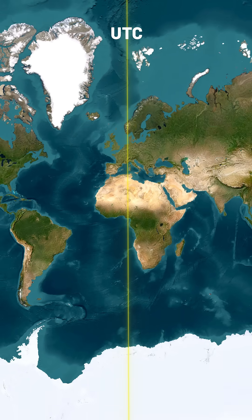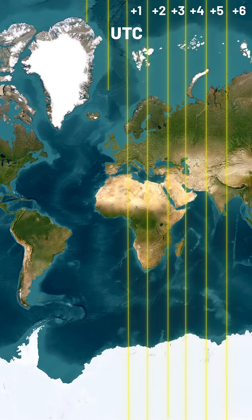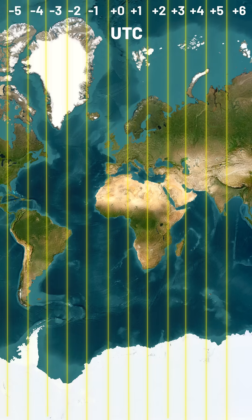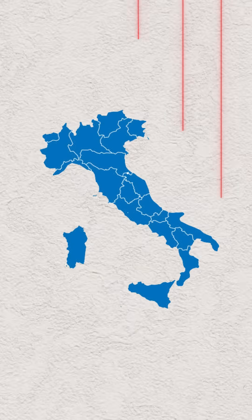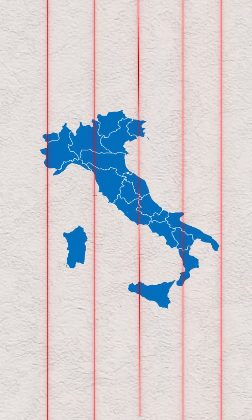Time zones to the east of Greenwich have positive UTC offsets, while those to the west have negative ones. But here's the twist: if we used straight vertical lines, some countries — even small ones — would be split into multiple time zones.